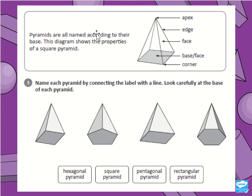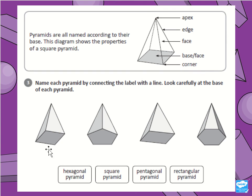All pyramids are named depending on the shape of the base. This is a square base, so it's called a square pyramid. There is an apex, an edge, faces, and corners or vertices — vertices are another name for corner. For question three, name each pyramid by connecting the label with a line. Look carefully at the base of each pyramid and see if you can figure out the names. Which one has a hexagonal base for the hexagonal pyramid? Which one is a square pyramid?